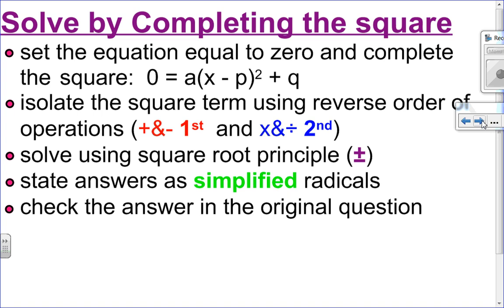Here are the steps to solve by completing the square. First, set the equation equal to 0 and complete the square. Once you've completed the square, isolate the square term using reverse order of operations — add and subtract first, multiply and divide second. Then solve using the square root principle, remembering the answer is positive and negative. State your answer as simplified radicals. And the most important part: always check to see if you've done it correctly.